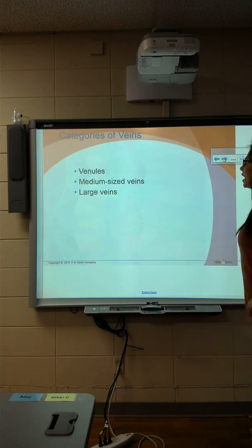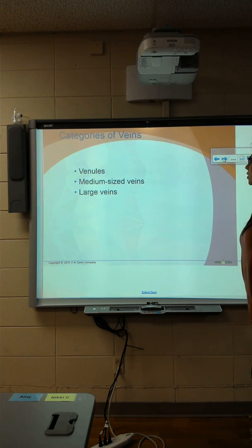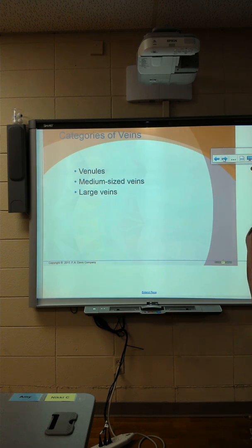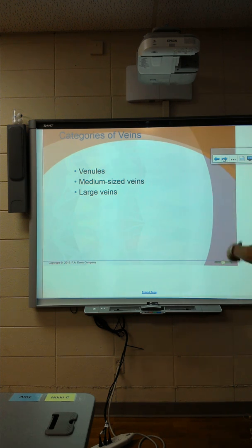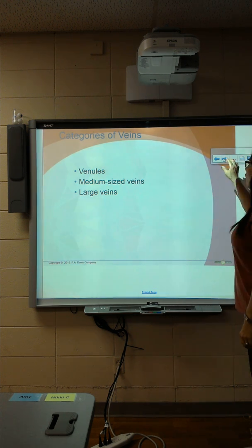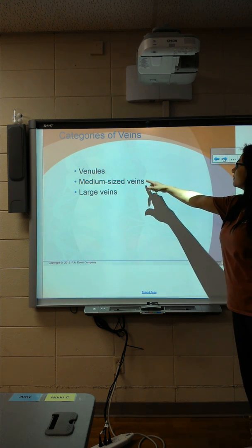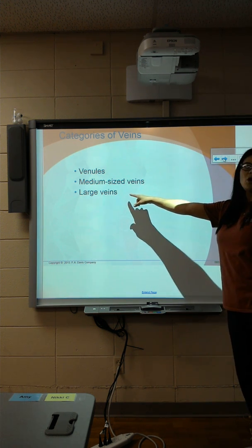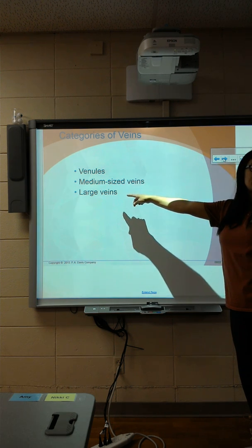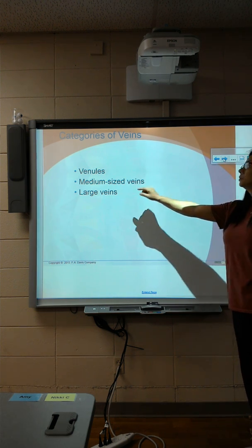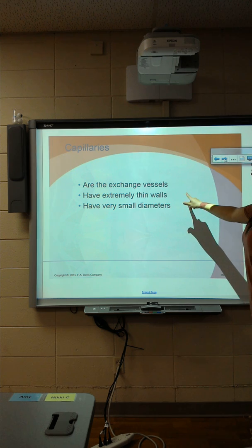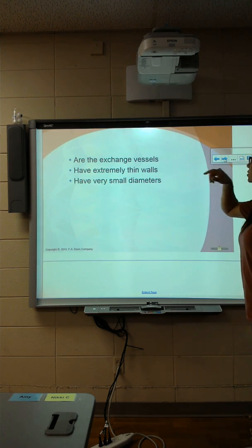Now, veins — we will go down into even smaller veins called venules. Veins are the big ones, and then they go into venules, then we'll hit capillaries — these are your tiny ones. Then we have some medium-sized ones and then some large ones, like your subclavian vein, which is the largest vein. We'll look at those when we do our mapping of the heart and circulation.